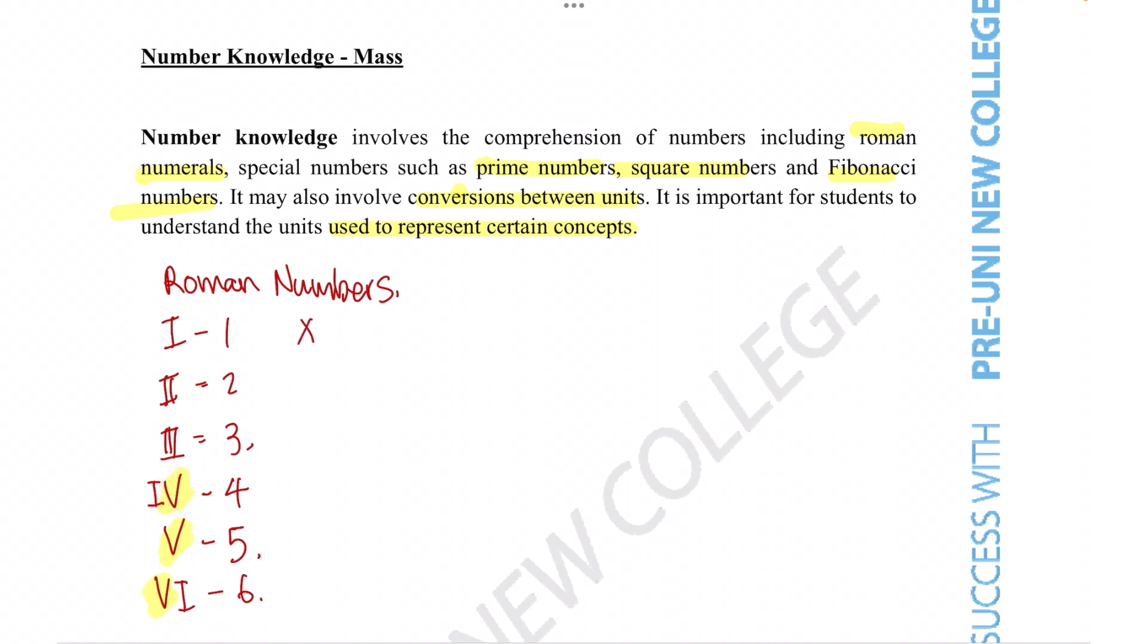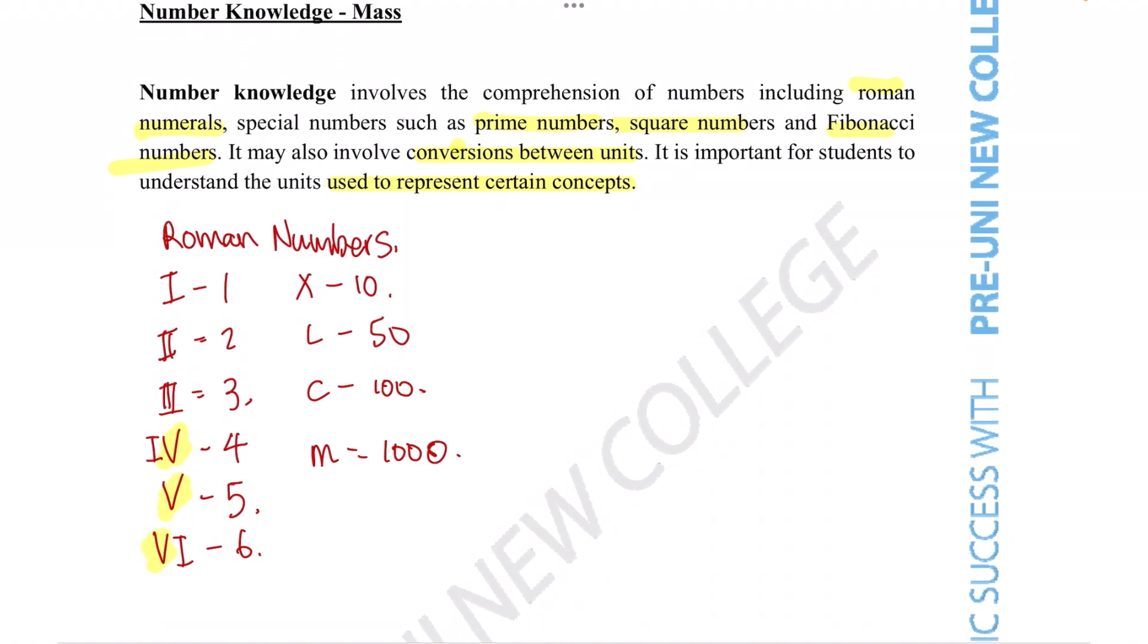So those numbers would be the letter X for the number 10, the letter L for the number 50, the letter C for the number 100, the letter D for the number 500, and the letter M for the number 1000. Using any combination of these will allow you to write most of the many numbers that these questions surrounding roman numerals will ask you to do.